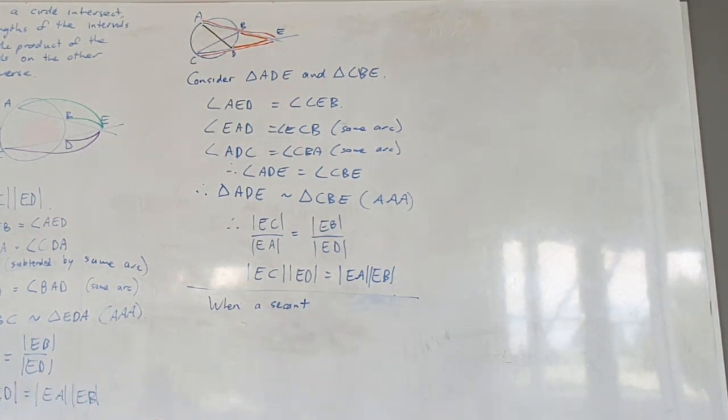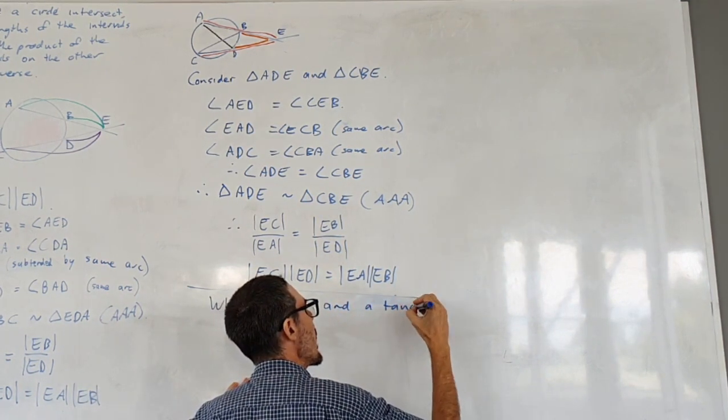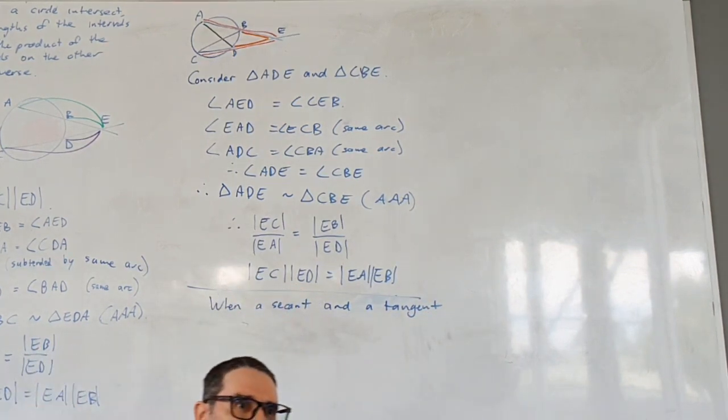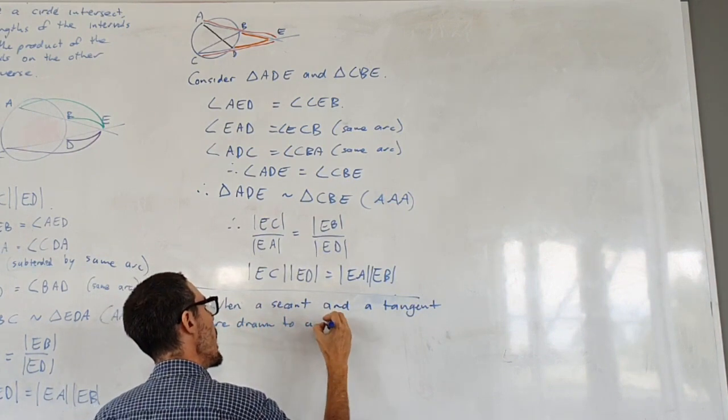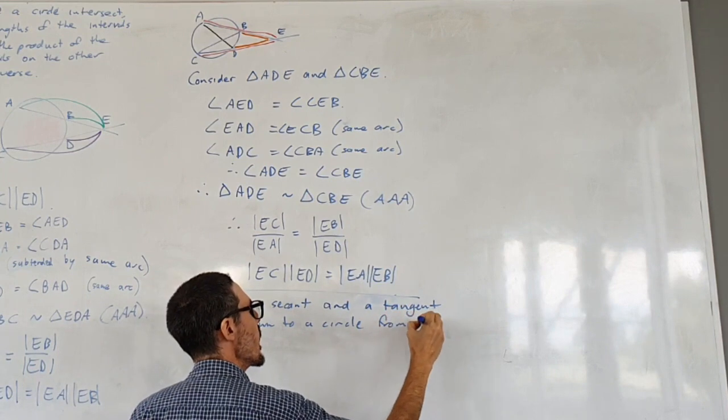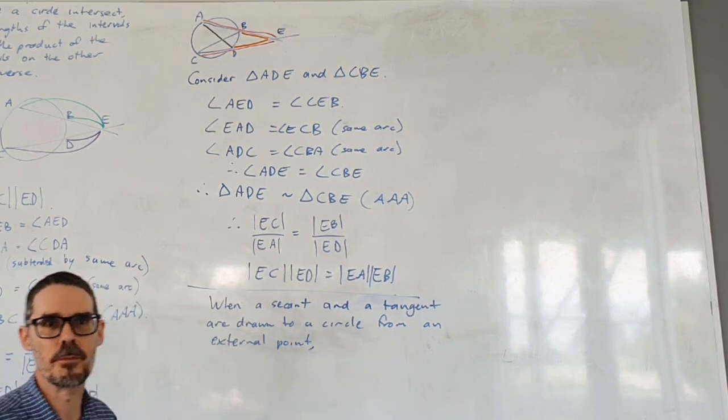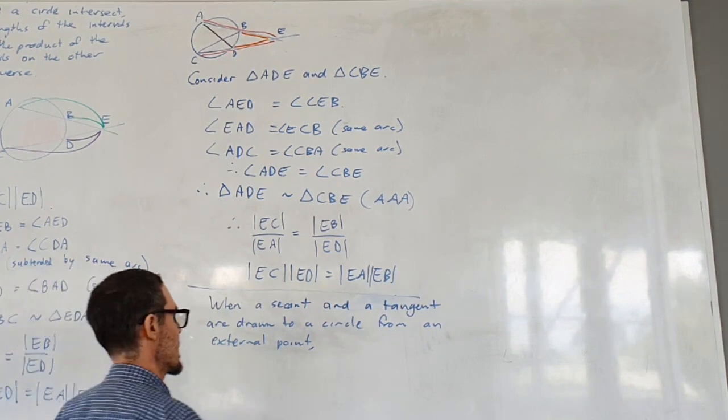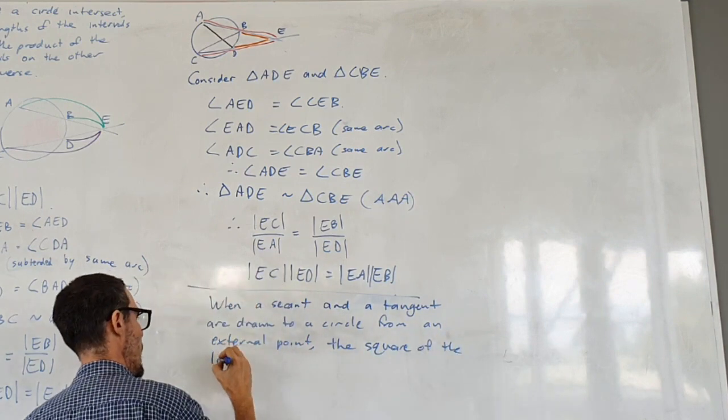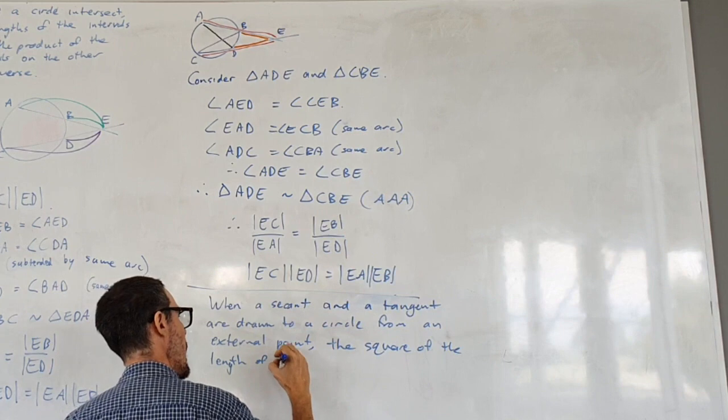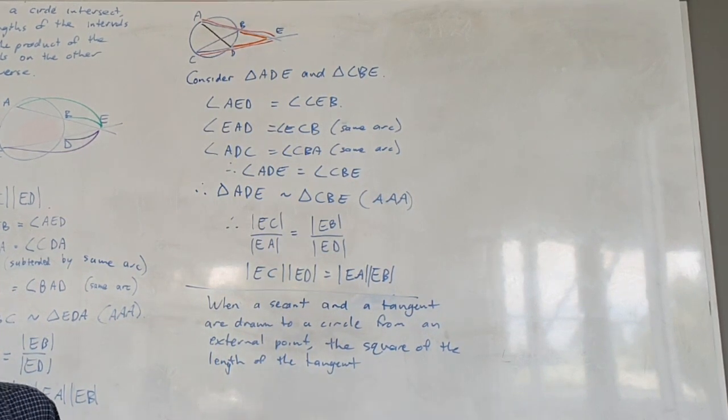I'm going to skip the bits in brackets. When a secant and a tangent are drawn to a circle from an external point, the square of the length of the tangent equals the product of the length to the circle on the secant.